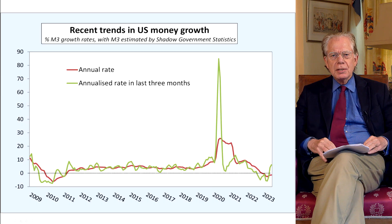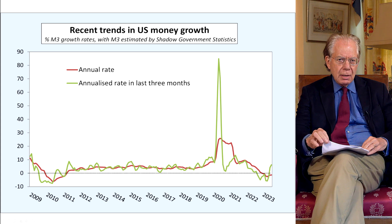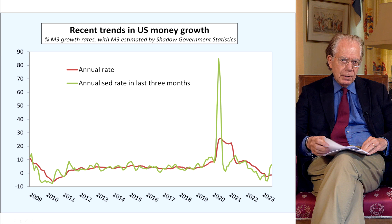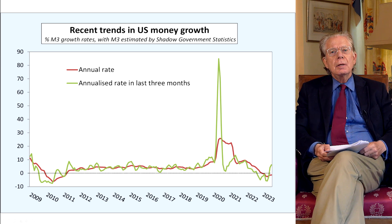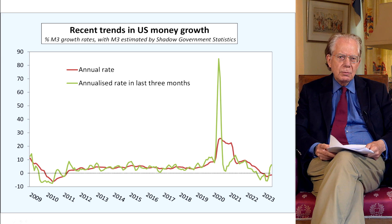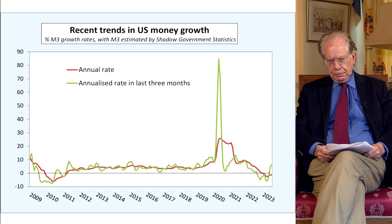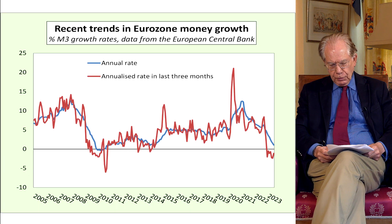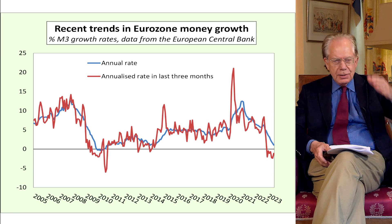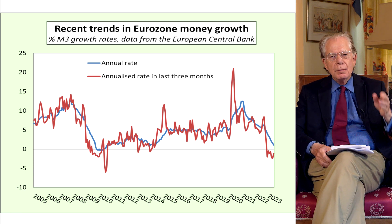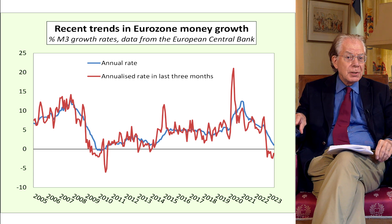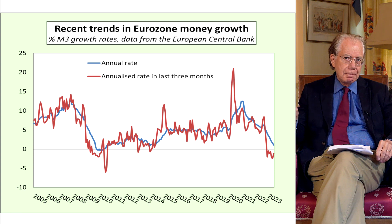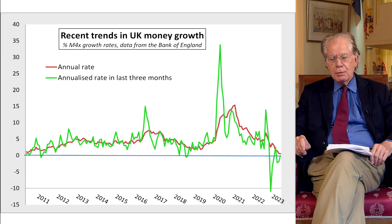Let's look at the latest numbers. Here are the numbers for the USA. There was a period when the quantity of money actually fell. The annual growth rate now is almost nothing. In the last three months, the quantity of money went sideways. This is the Eurozone — again, this surge in 2020, not such extremes as in the USA, but the last few months actually going down, continuing to fall on the three-month annualized line. And then in the UK, much the same as the Eurozone — actually going down in the last three months.